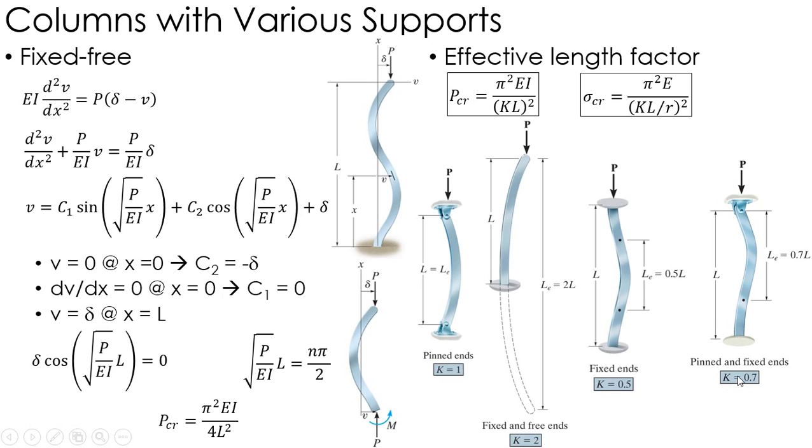We can look at two other ones: we've got two fixed ends and a fixed and a pinned end. You've got a K of 0.5 and a K of 0.7 here. The whole idea is finding that length at which you've got that kind of half of a sine wave. Using that effective length factor based on those supports, I can calculate the critical load and the critical stress of a column.